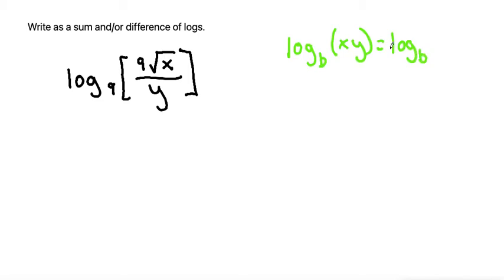Log base b first of x. Well, when it's multiplying it doesn't really matter, but you have the sum of two logs. So the base is the same on both logs and it's the sum of the log of the first factor plus the log of the second factor.